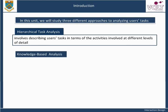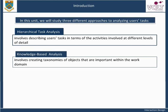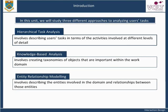Knowledge-based analysis involves creating taxonomies of objects that are important within the work domain. Entity relationship modeling involves describing the entities, objects, and actors involved in the domain and relationships between those entities. You may have come across this type of approach before if you have studied systems analysis, but don't worry if you haven't. In this unit, we will cover how to create each of these types of representation of a task and how to use that representation to reason about design.